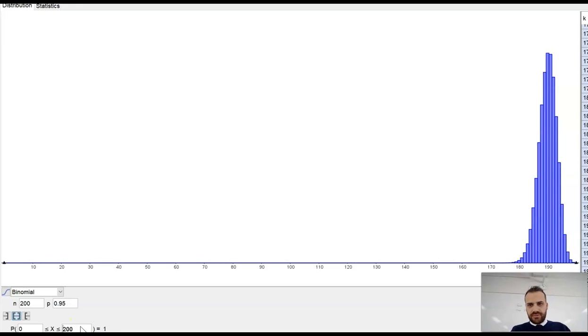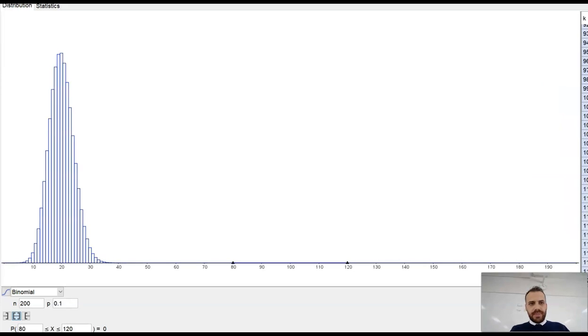I'll just colour it in a bit differently. It doesn't really have that nice symmetry. Similarly, if I went to a probability of success of 0.10, again, it's not as nicely symmetrical as it could be.